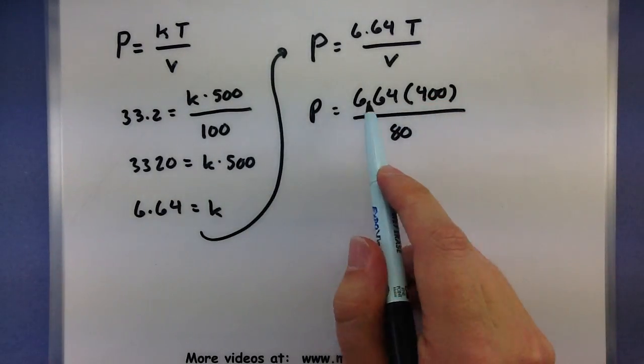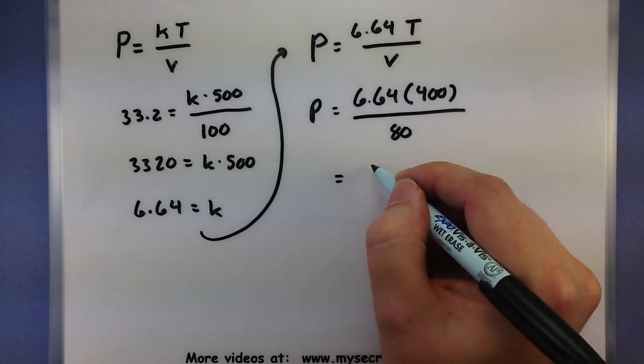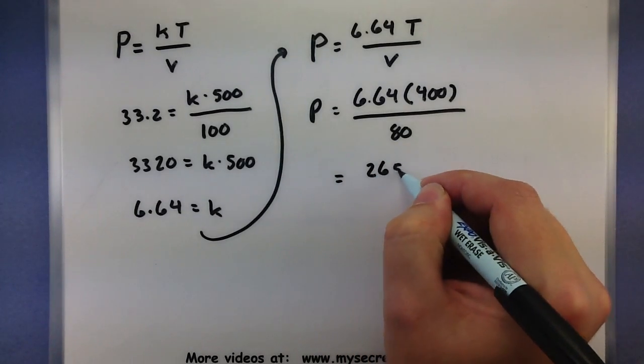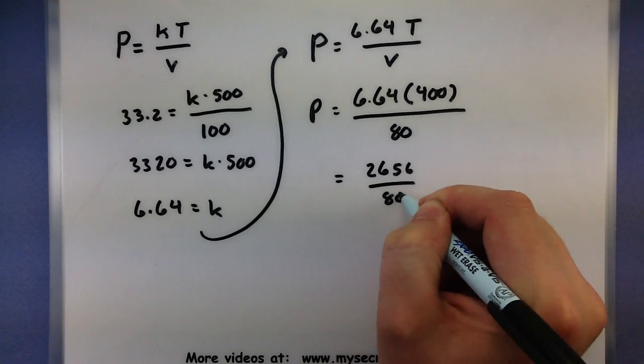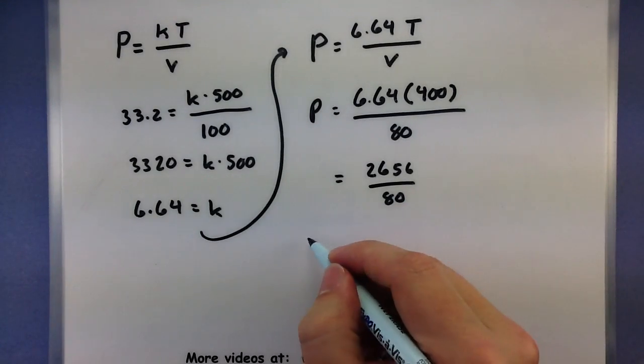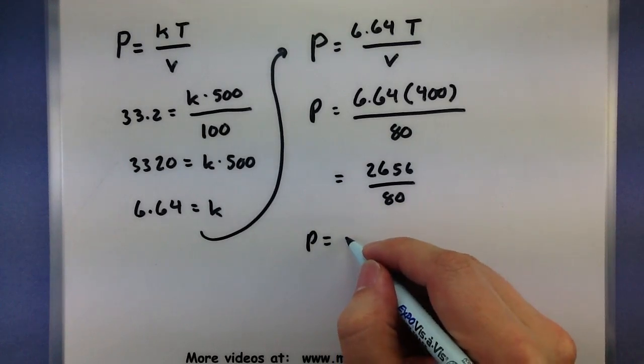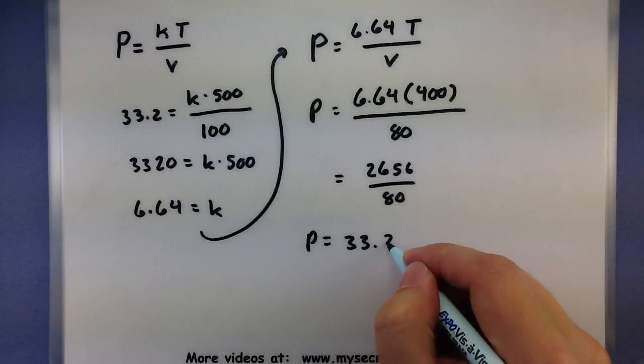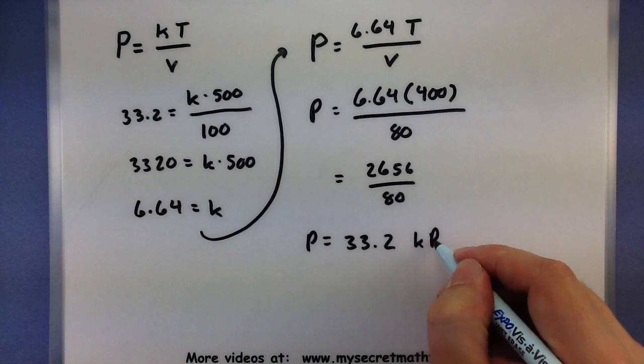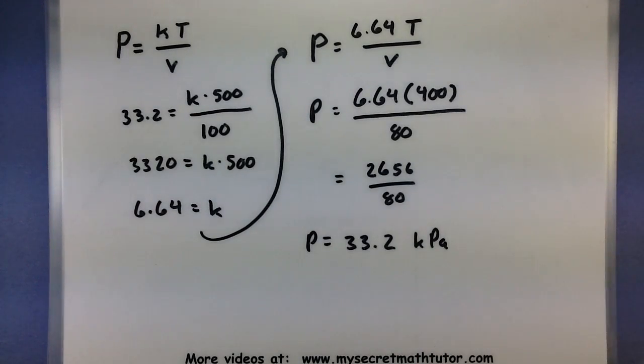Multiplying the top part here, I get 2,656 all over 80. And going ahead and doing the division, I get 33.2 kilopascals. So you can see that by changing this one, we ended up with the exact same pressure.